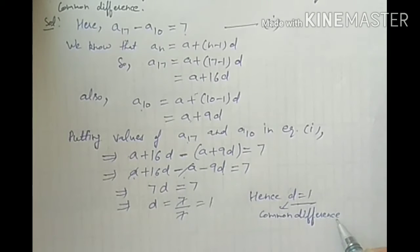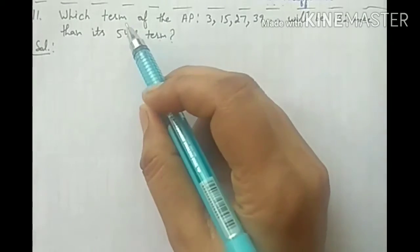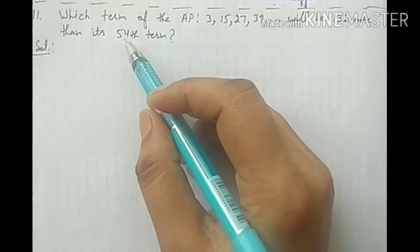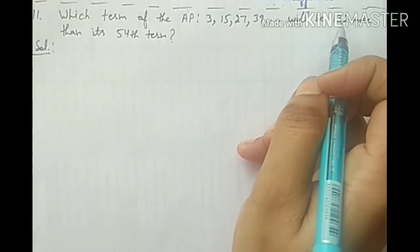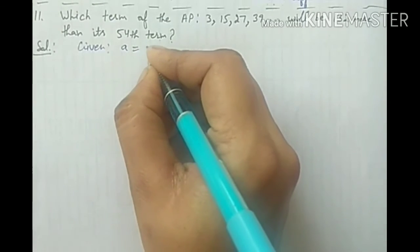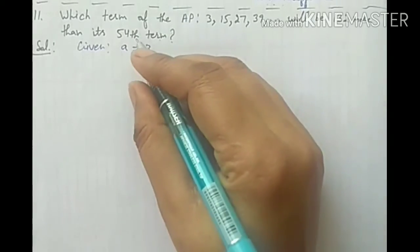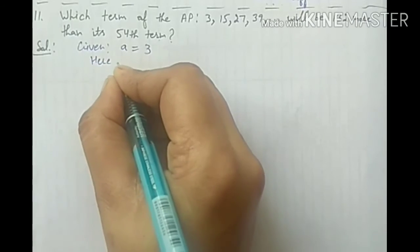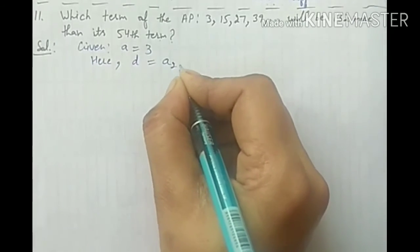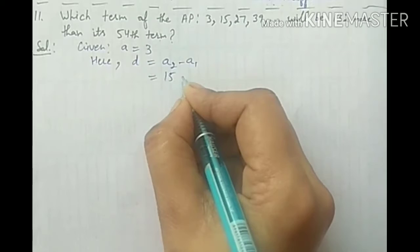D is our common difference, which means इस AP की हर एक term में 1 add हो रहा है। Now students, question number 11. इस AP की कौन सी term 54th term से 132 ज्यादा होगी? First term is equal to 3. We have to find out A54. First of all we will find out d: a2 minus a1 = 15 minus 3 = 12.